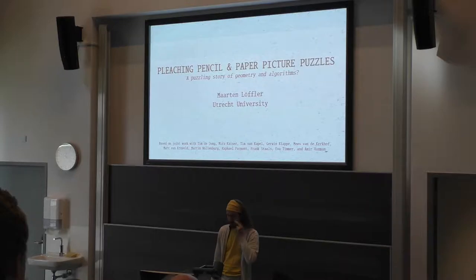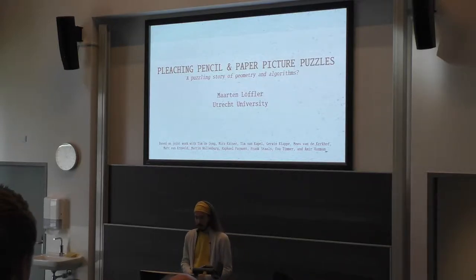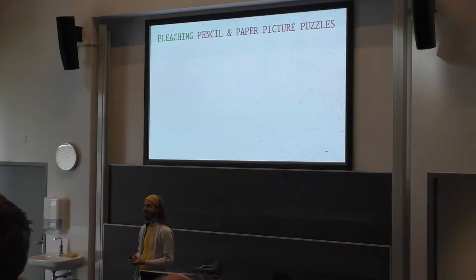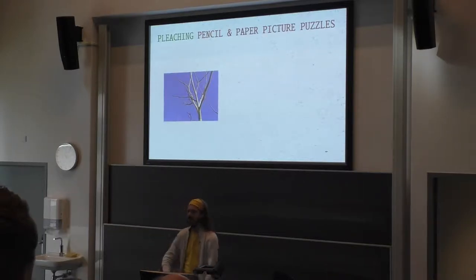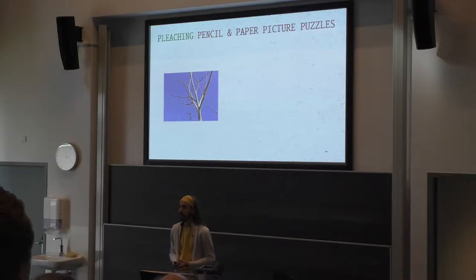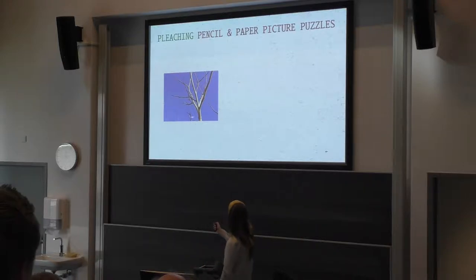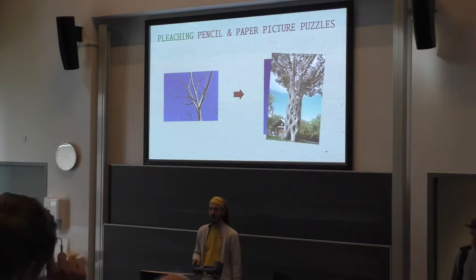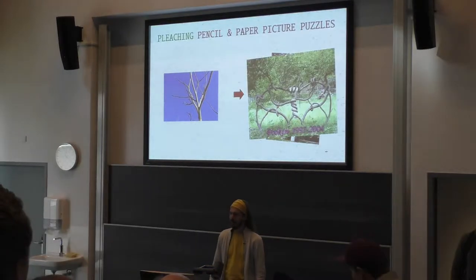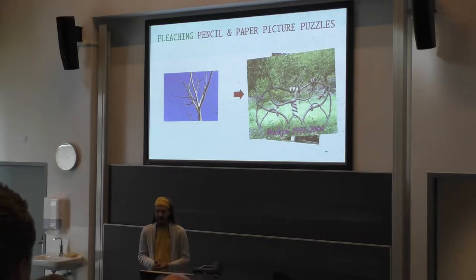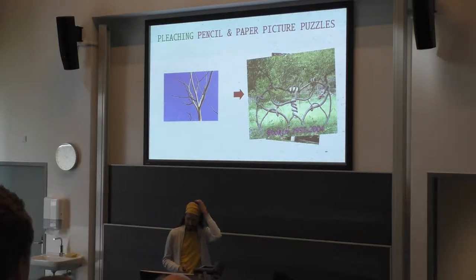Let me start at the beginning, namely with the title. Who knows what pleaching is? Weaving — weaving of plant material. So in pleaching, you take as input something like this, and then as output something like this. There are many people who do this for a hobby. They like to grow trees into interesting shapes. I was quite surprised to see that there's also world championships in pleaching, which I did not participate in.